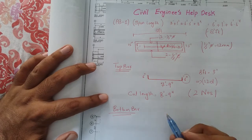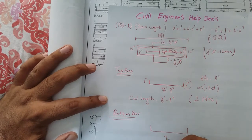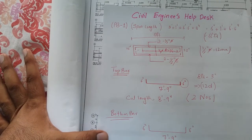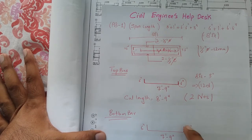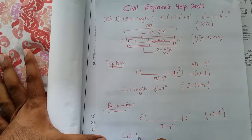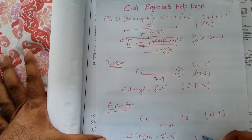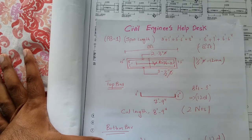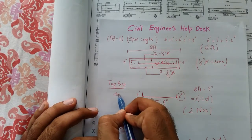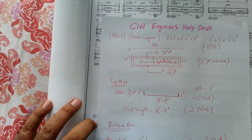Now we move to the bottom bar. The rule for the bottom bar remains the same — the span is the same, so the straight length is also 7 feet 9 inches. The L-bend is 6 inches as given in the diagram. If unknown, use 12 times the diameter. Therefore, the cut length for the bottom bar is also 8 feet 9 inches, and the number of bars is 2, with a diameter of 1/2 inch (12 mm).